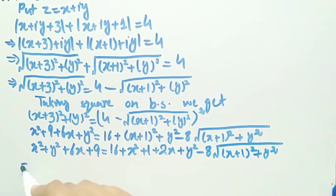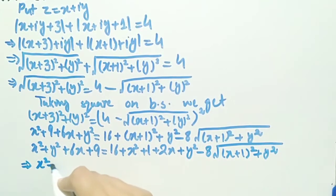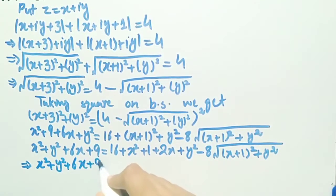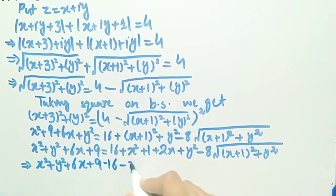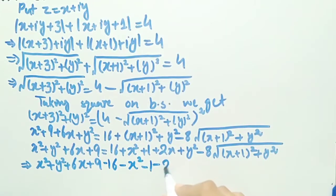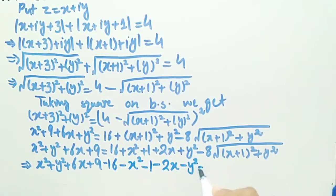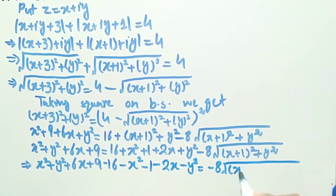Rewriting as x square plus y square plus 6x plus 9, and transferring these terms to this side of the equation, we get minus 16 minus x square minus 1 minus 2x minus y square, equal to minus 8 times square root of (x plus 1) whole square plus y square.